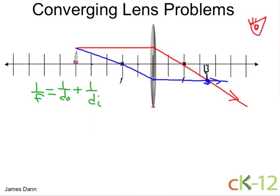Well, the focal distance is 2, so I have 1 half equals, the object is 5, so 1 over 5 plus 1 over the image distance. And now it's just a matter of solving this fraction.